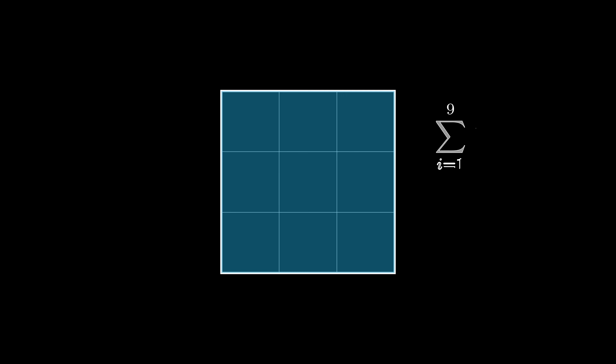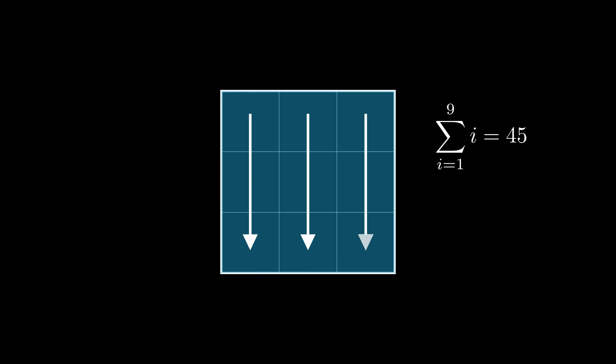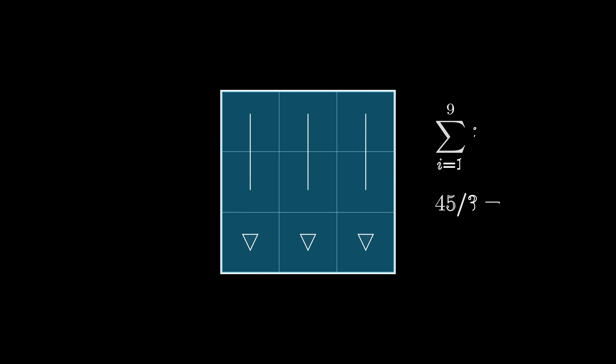The definition of a magic square is that each column in the box, each row in the box, and the two diagonals must add up to the same total. Under normal Sudoku rules we place the digits 1 through to 9 in every box, so we know the sum is 45. As we need three columns to sum to 45 and each must be equal, each column, row, and diagonal must sum to 15. Feel free to pause or rewind to convince yourself that 15 is the only possible total.